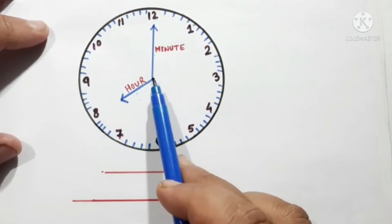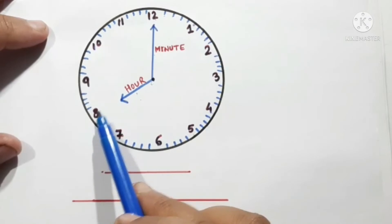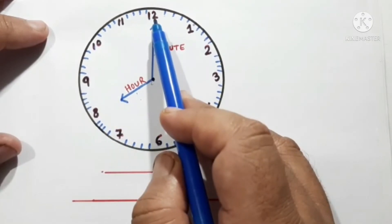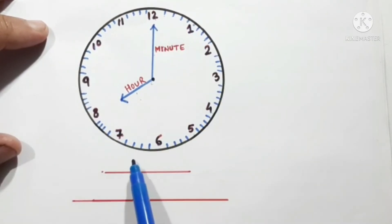Now, right now, you can see that the hour hand is at 8 and the minute hand is at 12. So the time is 8. You can also write as 8 o'clock.